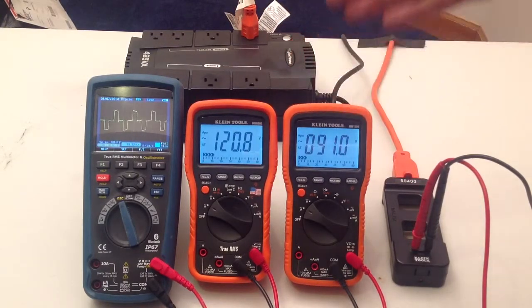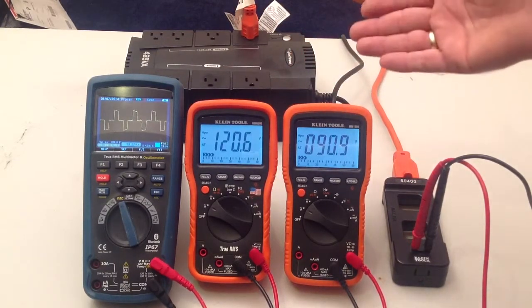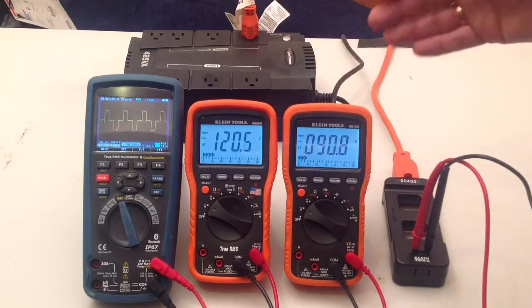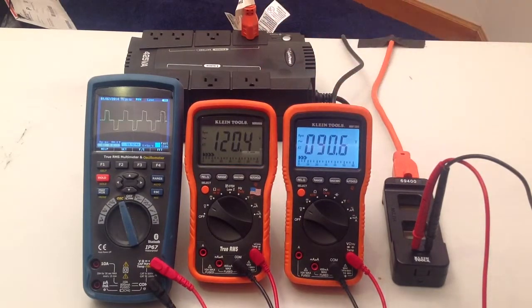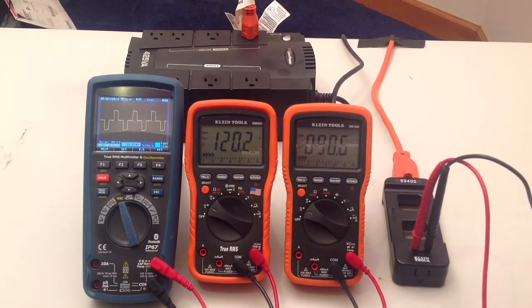Having a true RMS meter really lets you know what is happening with your line, gives you a more accurate reading, where the RMS meter is good basically when you have a pure sine wave.